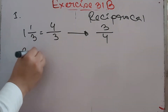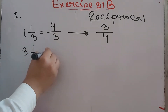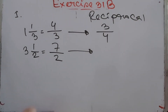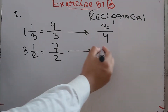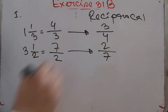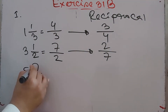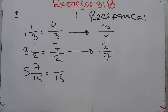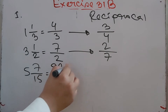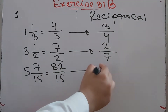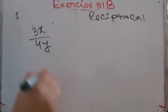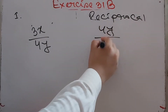Next, 3 whole 1/2: that is 2×3 = 6 plus 1 = 7/2, so the reciprocal is 2/7. Next, 5 whole 7/15: 15×5 = 75 plus 7 = 82/15, so the reciprocal is 15/82. Last, 3x by 4y: the reciprocal is 4y by 3x.